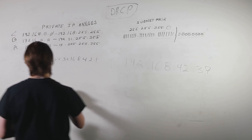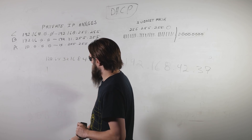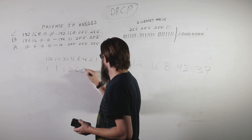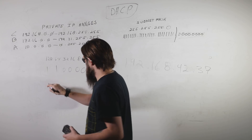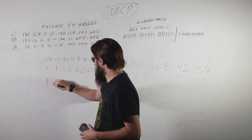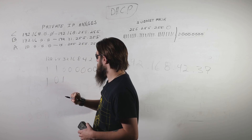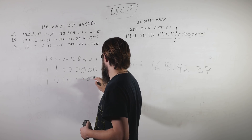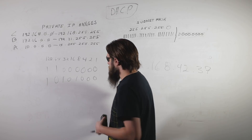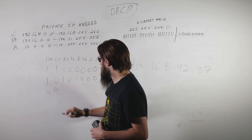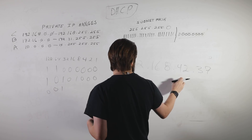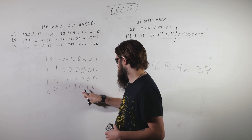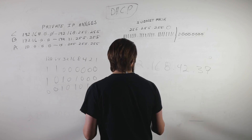To convert 192 to binary, we start with a 1 in the 128 place. 192 minus 128 leaves 64, so we put a 1 in the 64 place — that gives us 192. For 168: 128 plus 32 is 160, and we need 8 more, so we put a 1 in the 8 place. For 42: we don't need 128 or 64, we do need 32, leaving 10. Not 16, so we use 8 leaving 2 — result: 00101010 in binary.